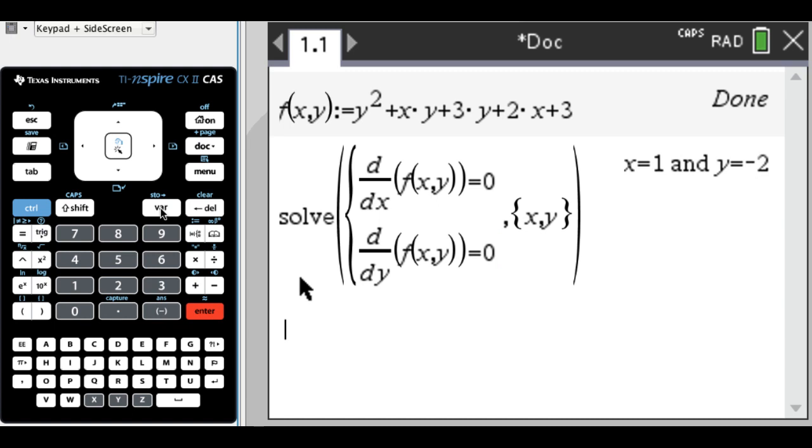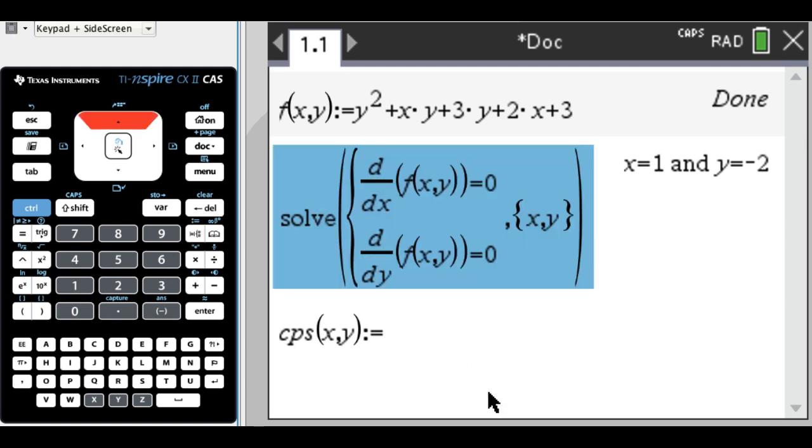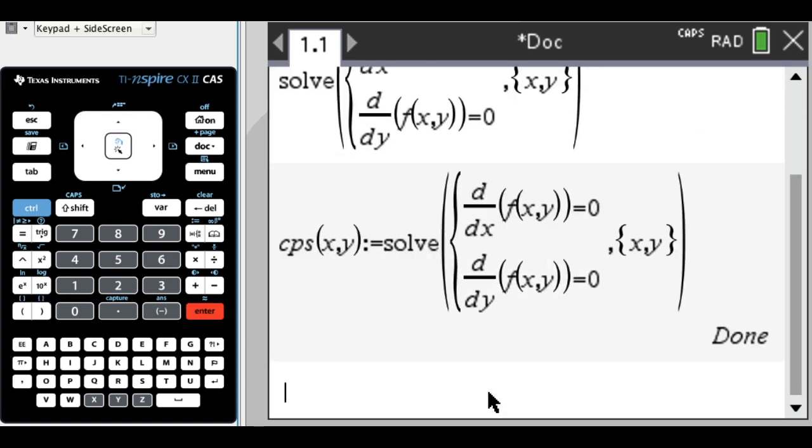I need to test those to see if it's a maximum, minimum, or saddle point, but I would like to make this something that I could just generally use. So what I'm going to do is I'm going to name it. So I'm going to call it CPs, so critical points, of x, y. So you have to make it a function of x and y, otherwise it stores just the answer to the previous question. We don't want that. We want it to be a function. So colon equals, which is control and templates for you. And then just go up, get this, press enter.